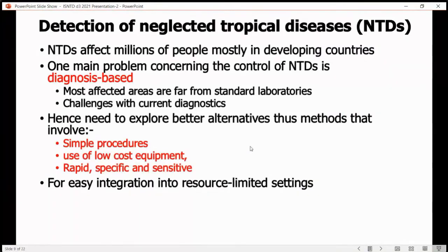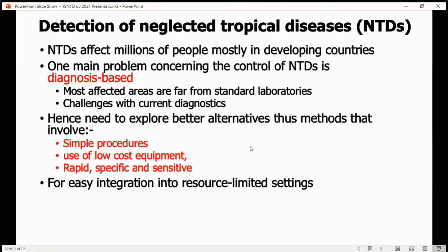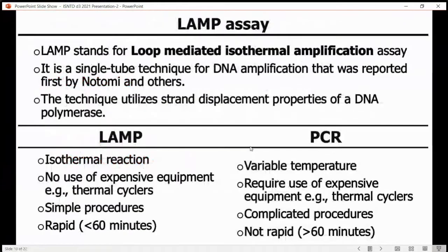Both bovine tuberculosis and other neglected tropical diseases affect millions of people, most in developing countries. One main problem concerning the control of NTDs is diagnosis, because most affected areas have limited resources, are far from standard laboratories, and there are challenges with current diagnostic methods. So we embarked on a study to explore the best alternative tool that could use simple procedures, low-cost equipment, be rapid and safe, and can easily be integrated into resource-limited settings — and hence we opted for LAMP assay.